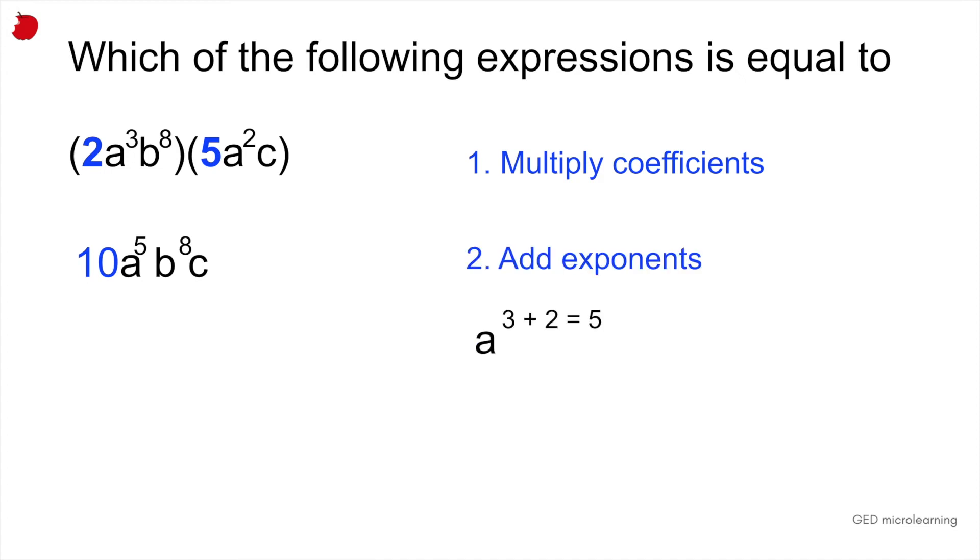So if we look at the letter a in both of these brackets, you can see that in the first one, we have 2a raised to the 3rd power, and then in the second bracket, we have 5a raised to the 2nd power. So when you multiply these exponents together, what you're really doing is that you're adding them together. So you would add 3 plus 2, that gives you 5. So your answer would be 10a raised to the 5th power.